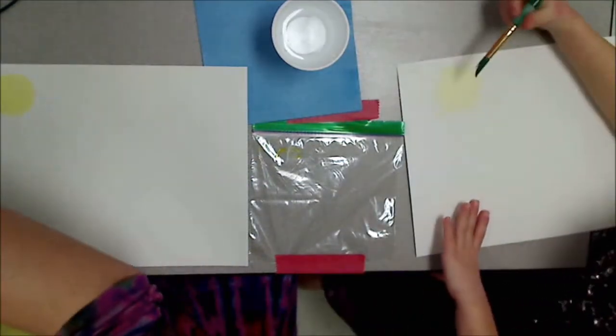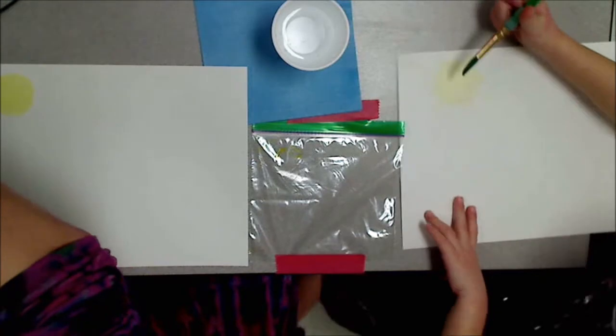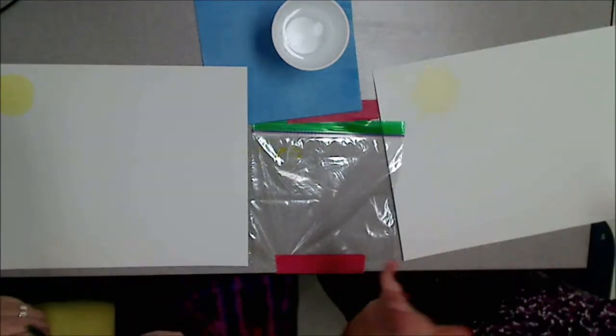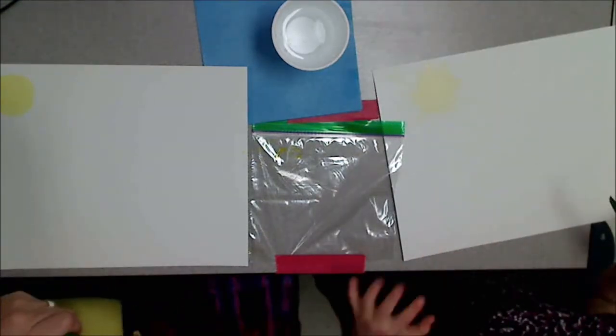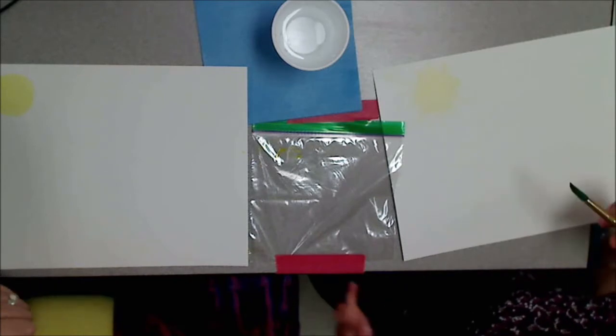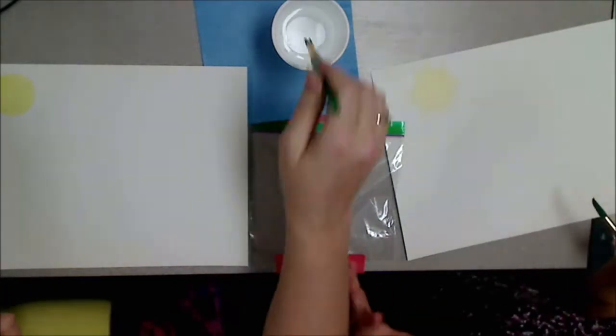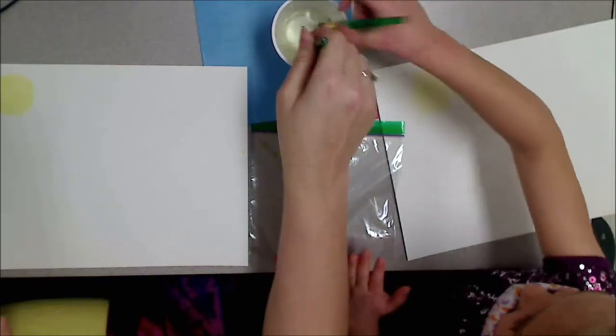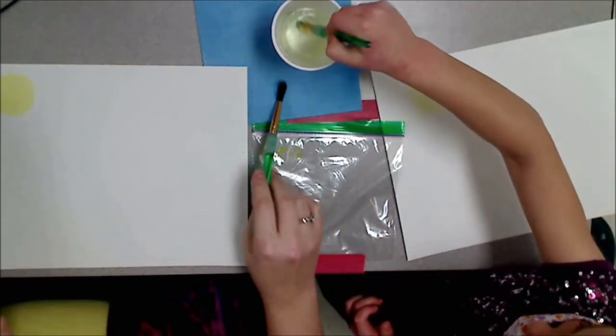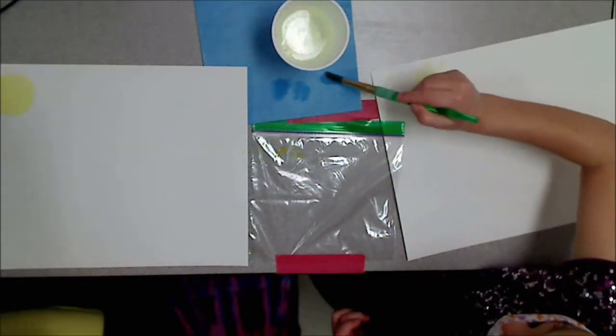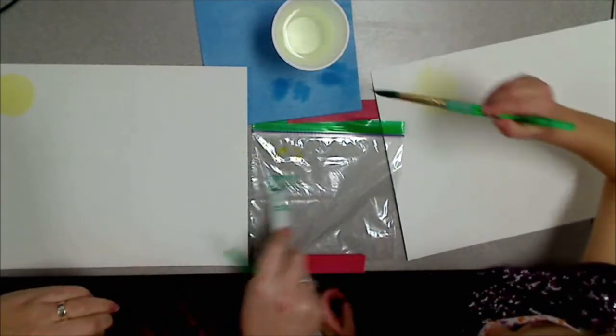All right, are you ready to make some grass, Rosie? Yeah! What color do we need for grass? Green. You can use light green or dark green. I'm going to use both. Mommy, you can use both like me. Okay, let's wash our brushes from the yellow. Wipe it on our towel. Let's rub green on our plastic.